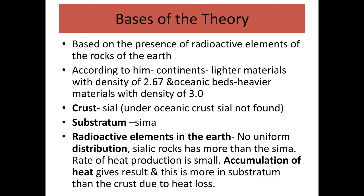The basis of this theory is the presence of radioactive elements in the rocks of the earth. In continents, lighter materials are present with a density of about 2.67, and in oceanic beds there are heavier materials with a density of three. The crust is made up of sial, which is a less dense material. Under oceanic crust, sial is not found — instead, sima is found. The substratum is made up of sima. Sialic rocks have more radioactive elements than sima.